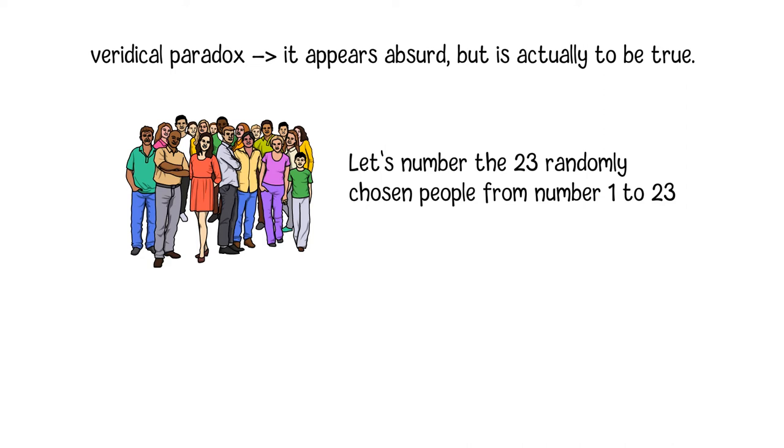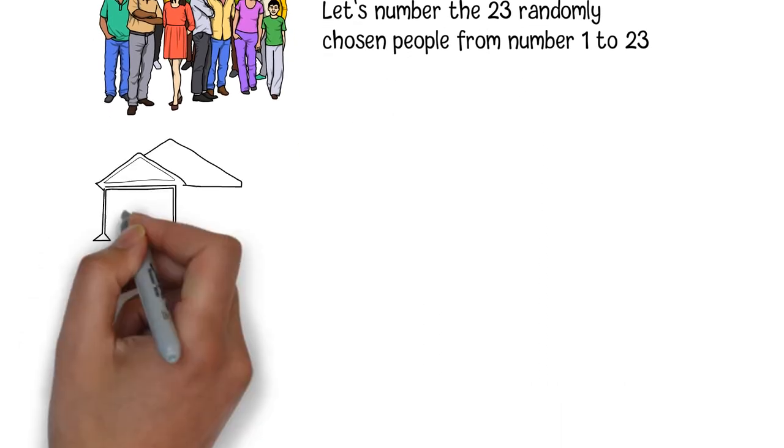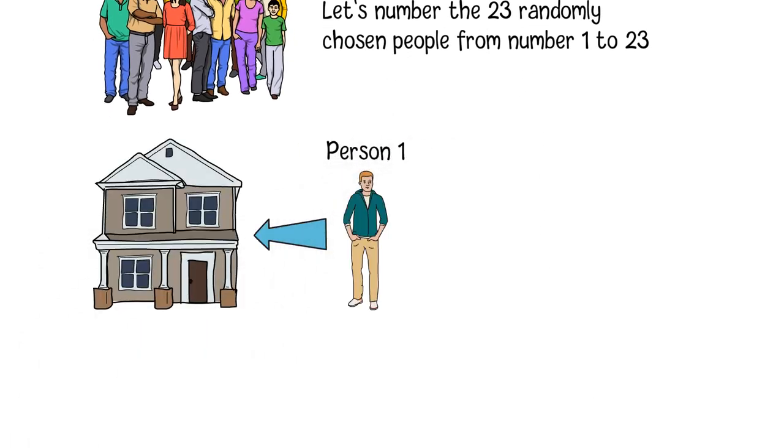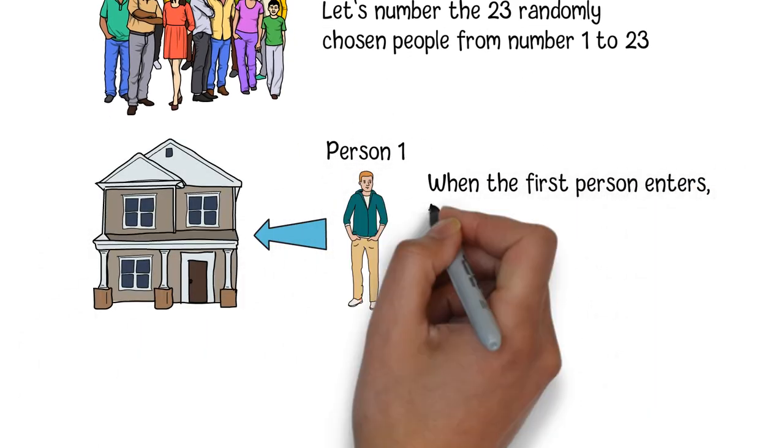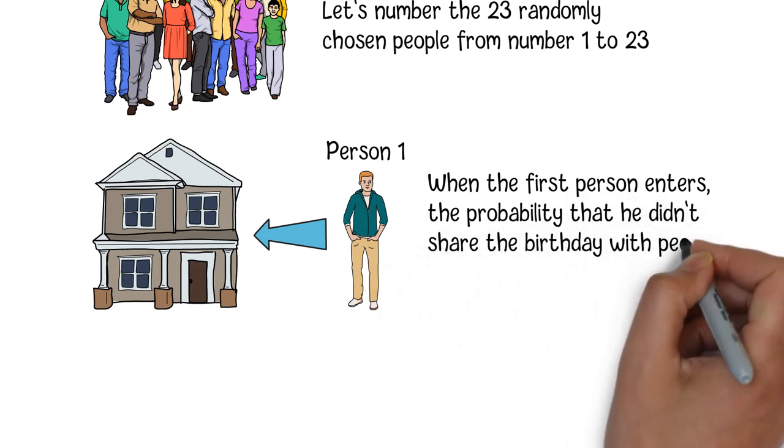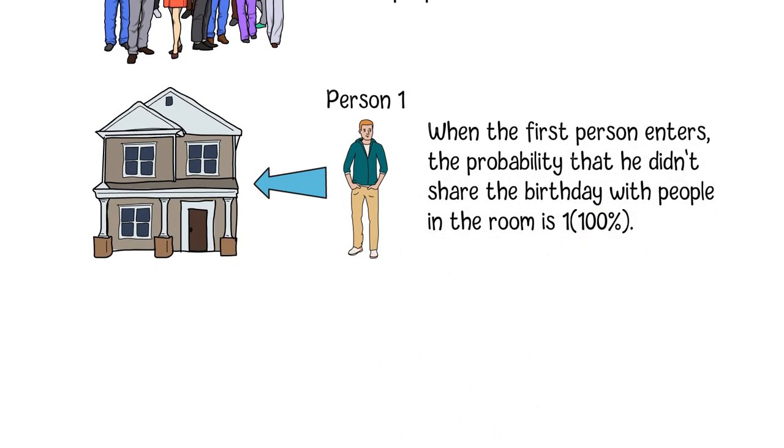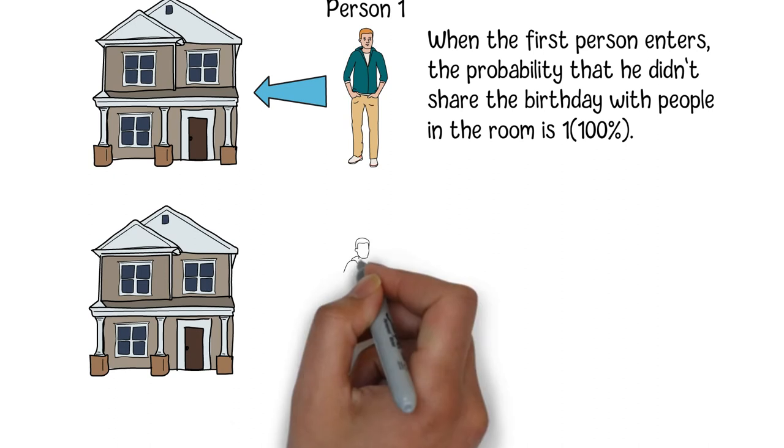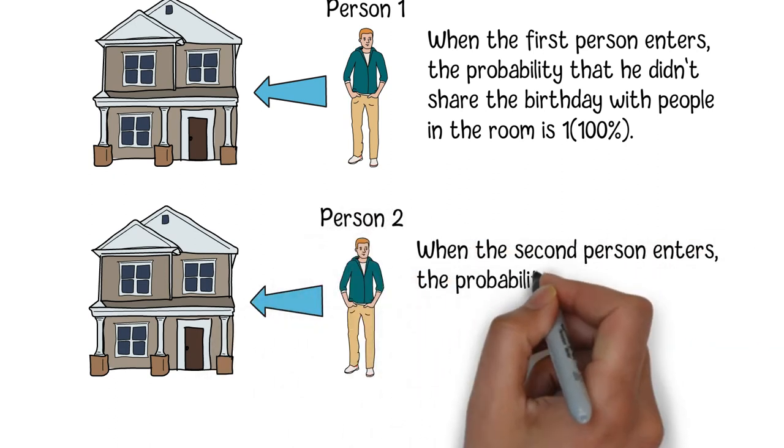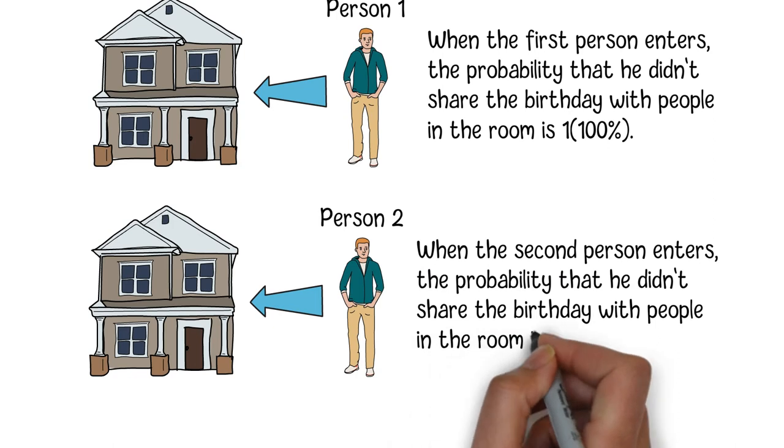We will ask them to enter the room one by one and we will calculate the probability that the newly entered person doesn't share the birthday with all people already in the room. When the first person enters, since there are no people in the room, the probability that he doesn't share the birthday with people in the room is 100%. When person 2 enters the room, since person 1 is already in the room, the probability that he doesn't share the birthday with people in the room is 364 over 365.